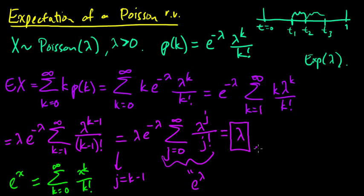And lambda is the mean of a Poisson random variable. All right, so the takeaway now, what do we get here?